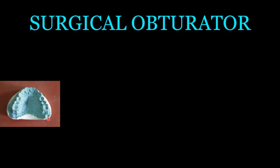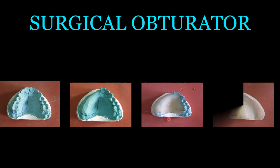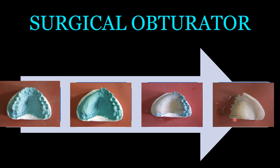For the surgical obturator, it is inserted on the day of surgery. The impression is made before surgery, the preliminary cast is obtained, and the drawing of the surgical part is guided by the surgeon. A mock surgery is performed on the cast. Then a clear acrylic plate is fabricated and inserted at the time of surgery. In dentulous cases, retention can be obtained by a simple clasp, or holes can be wired to the alveolar ridge or zygomatic arch. In edentulous cases, the complete obturator is wired into the alveolar ridge or zygomatic arch. It will be replaced with an interim or definitive obturator after complete healing.